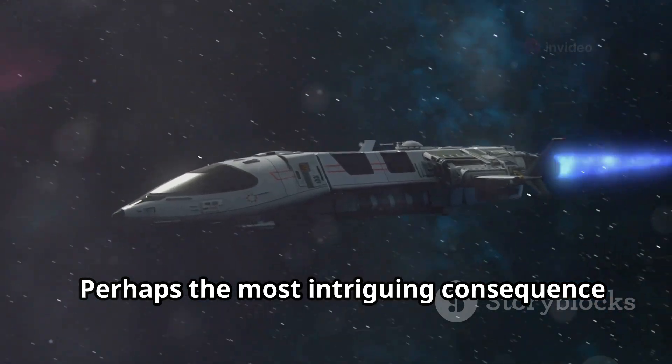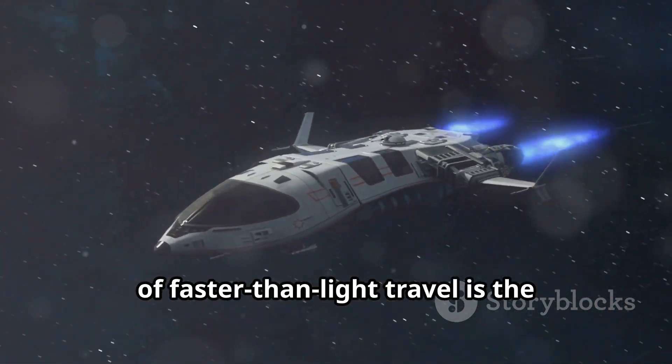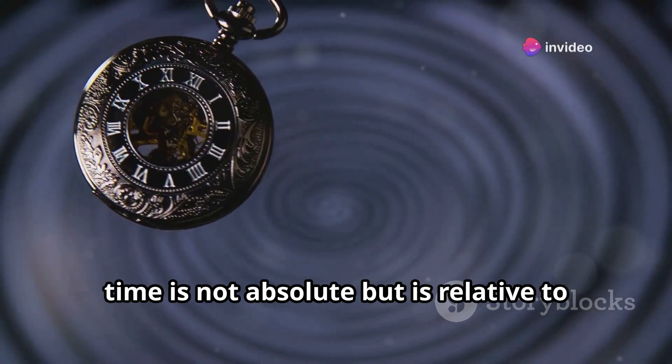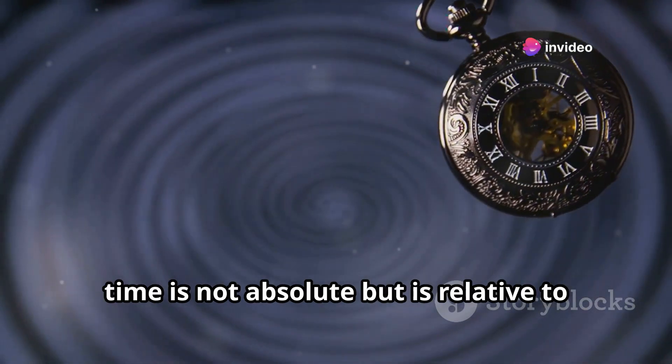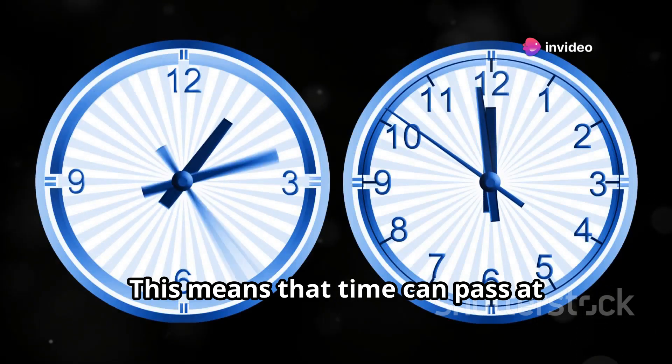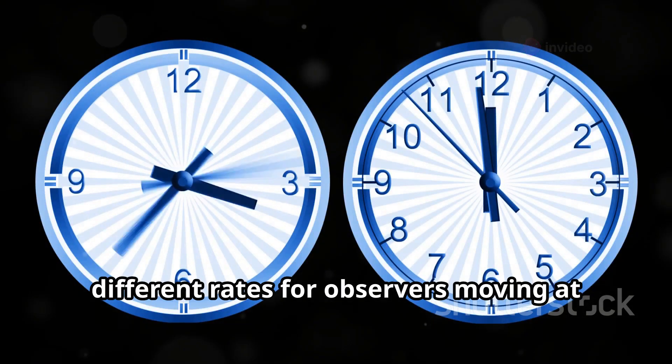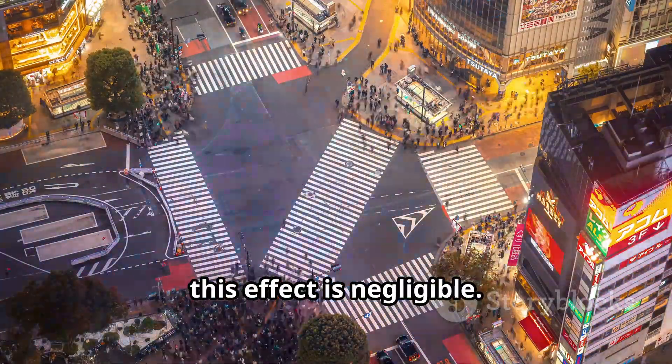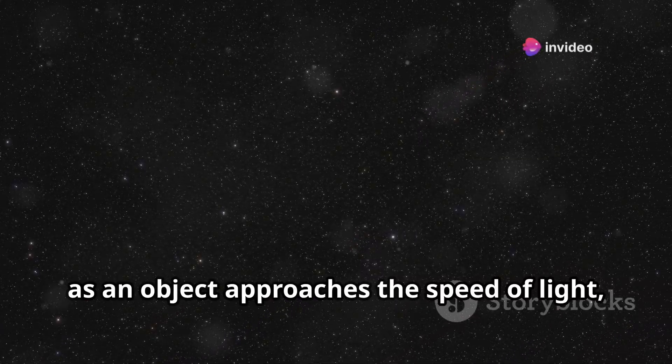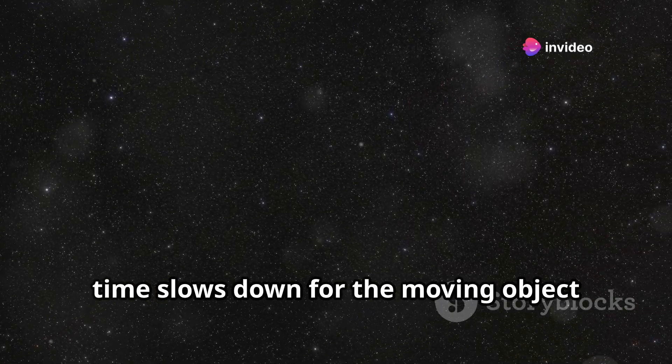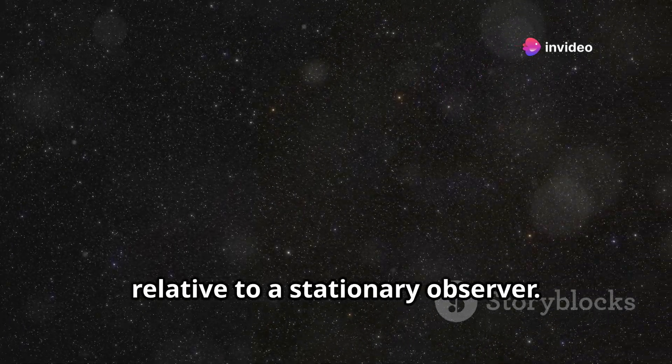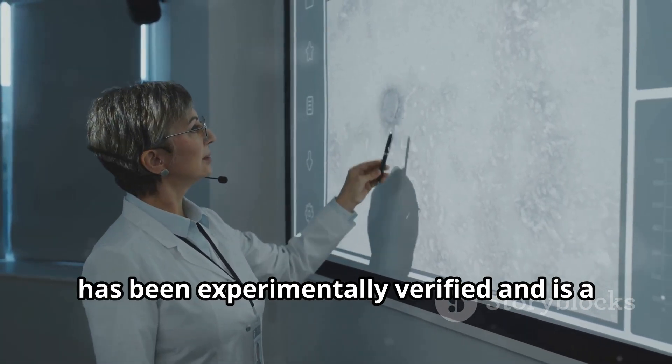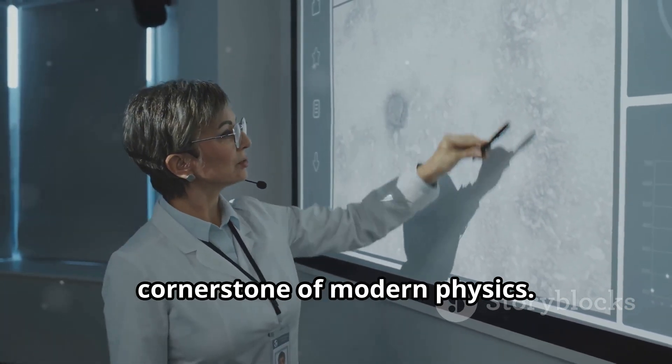Perhaps the most intriguing consequence of faster-than-light travel is the possibility of time travel. According to Einstein's theory of relativity, time is not absolute but is relative to the observer's frame of reference. This means that time can pass at different rates for observers moving at different speeds. While traveling at everyday speeds this effect is negligible, however, as an object approaches the speed of light, time slows down for the moving object relative to a stationary observer. This phenomenon, known as time dilation, has been experimentally verified and is a cornerstone of modern physics.